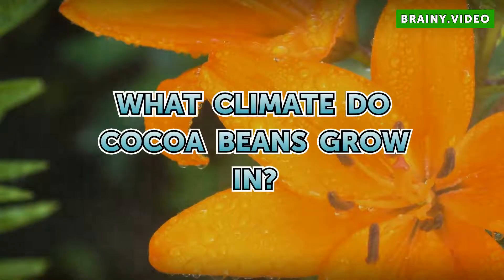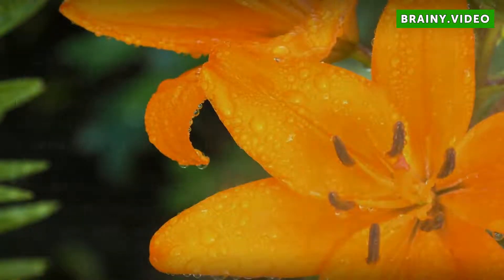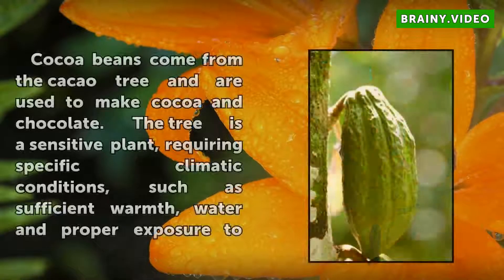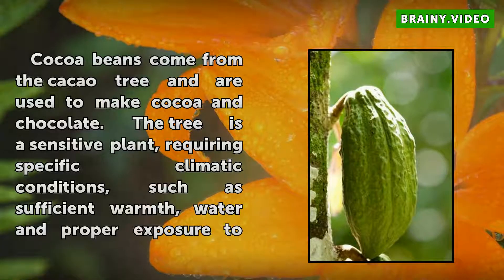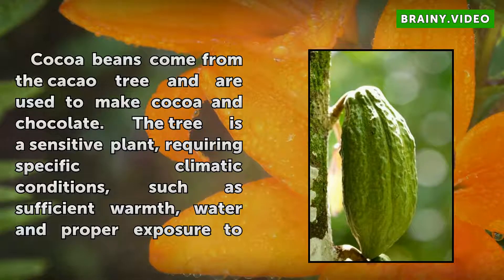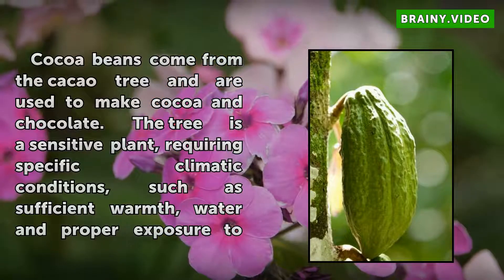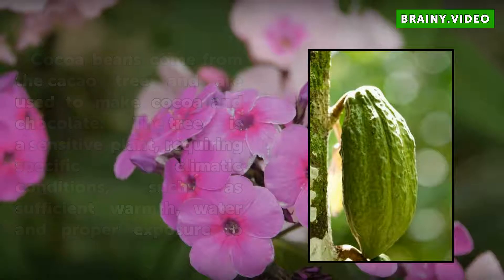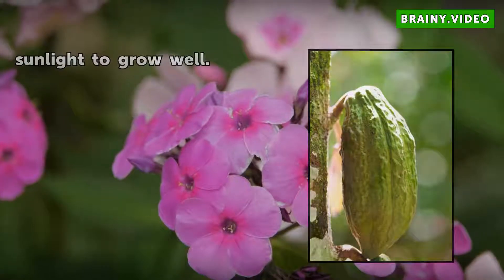What climate do cocoa beans grow in? Cocoa beans come from the cacao tree and are used to make cocoa and chocolate. The tree is a sensitive plant, requiring specific climatic conditions, such as sufficient warmth, water, and proper exposure to sunlight to grow well.